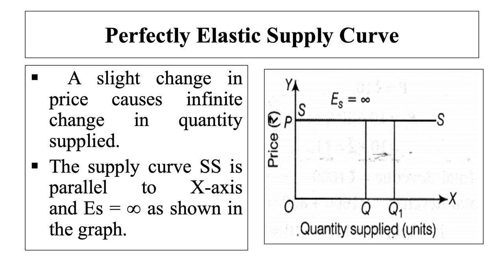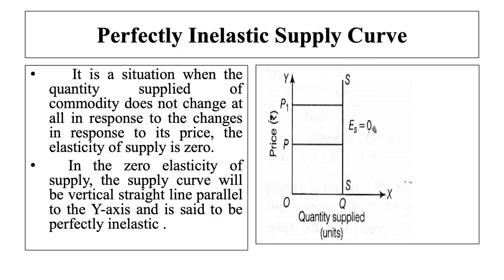The last case is when elasticity of supply is equal to zero. This is known as perfectly inelastic supply. It is a situation when the quantity supplied of a good does not change at all in response to a change in its price. In zero elasticity of supply, the supply curve is a vertical straight line parallel to the Y-axis. The supply of exclusive items like a painting of the Mona Lisa falls into this category — whatever the price on offer, there is no way to increase its supply. Other real-life examples of perfectly inelastic goods include water, gasoline, housing, and food.